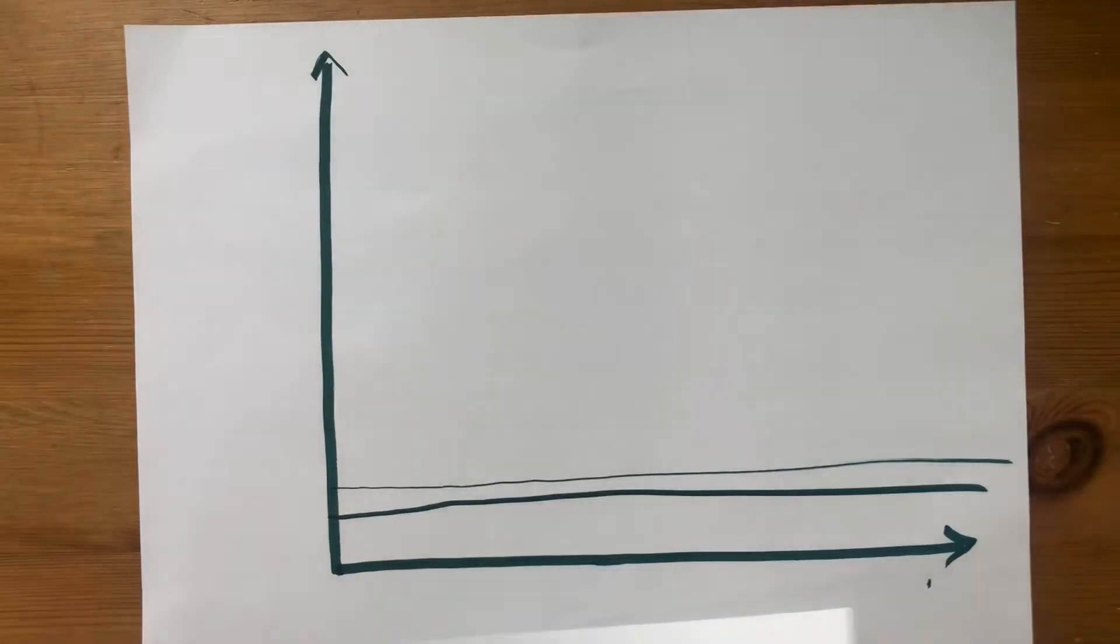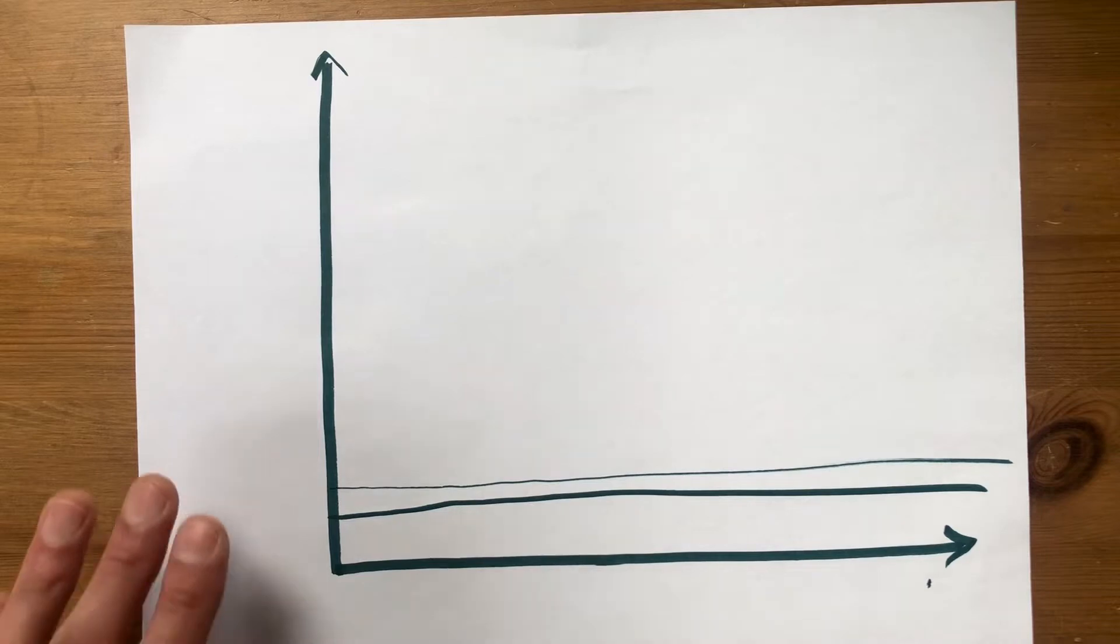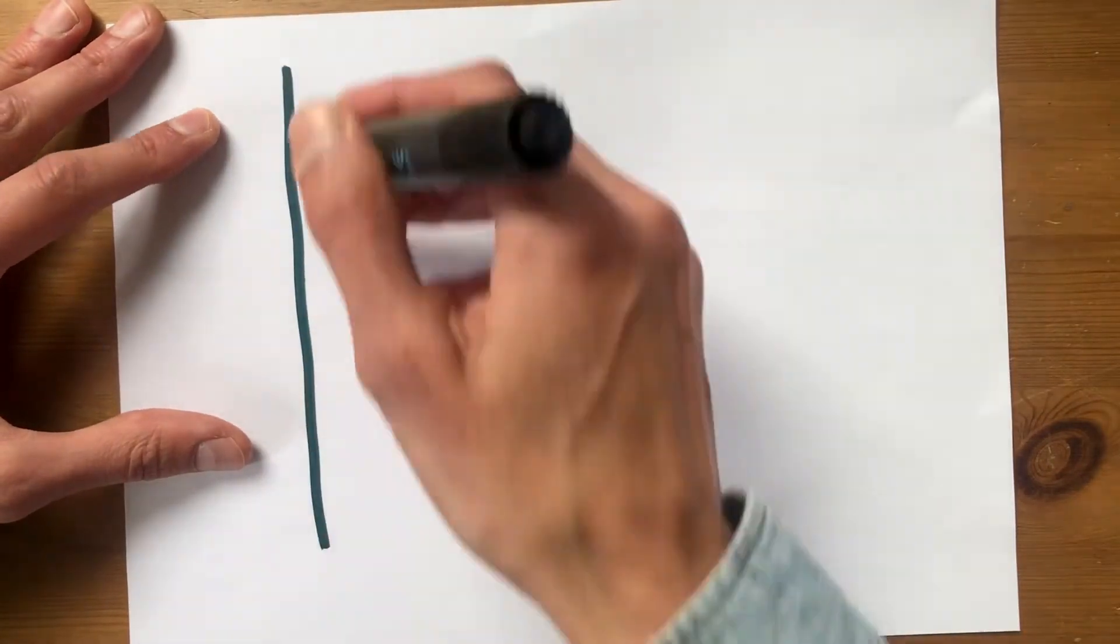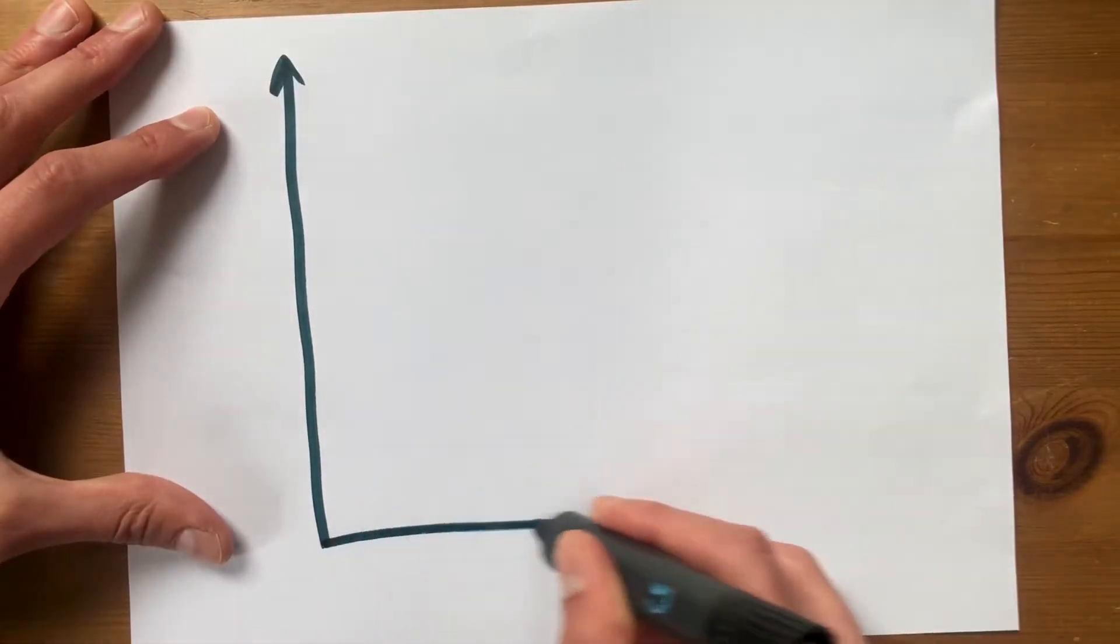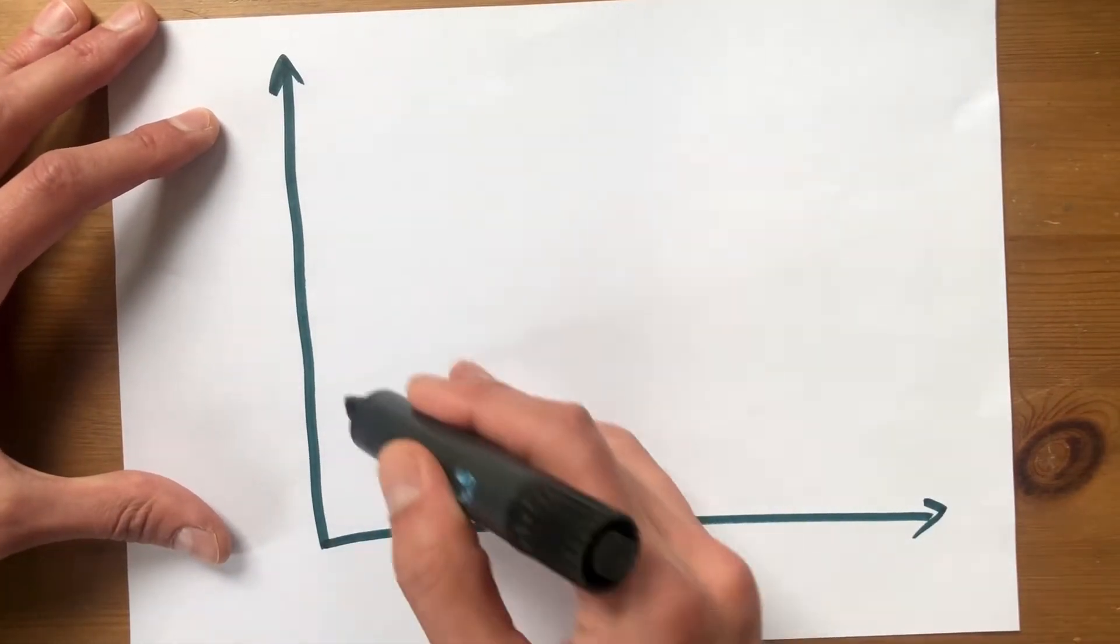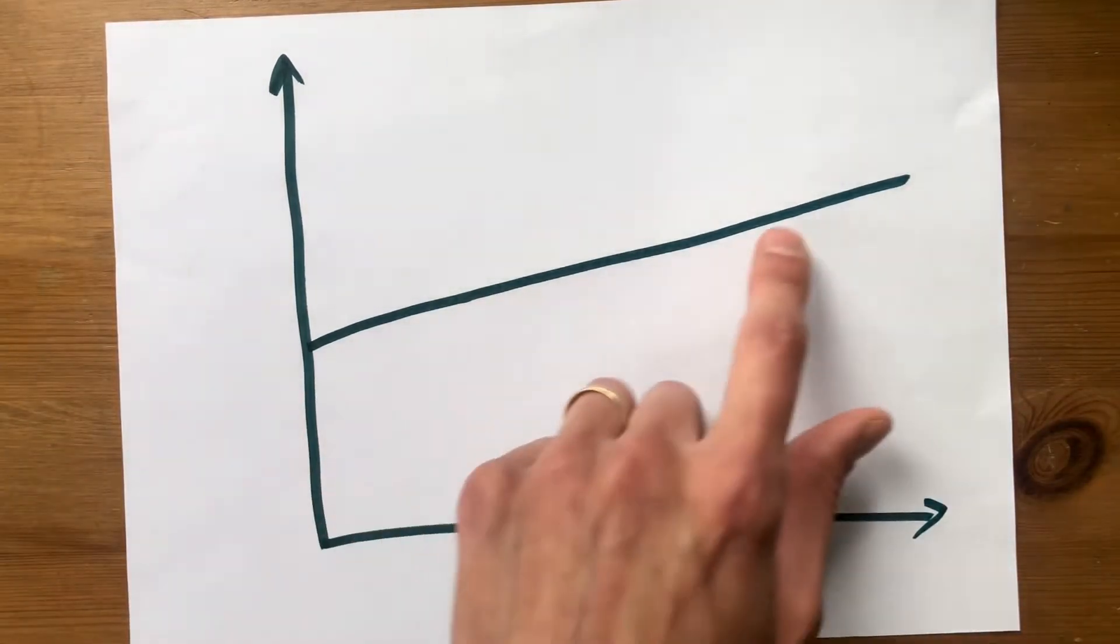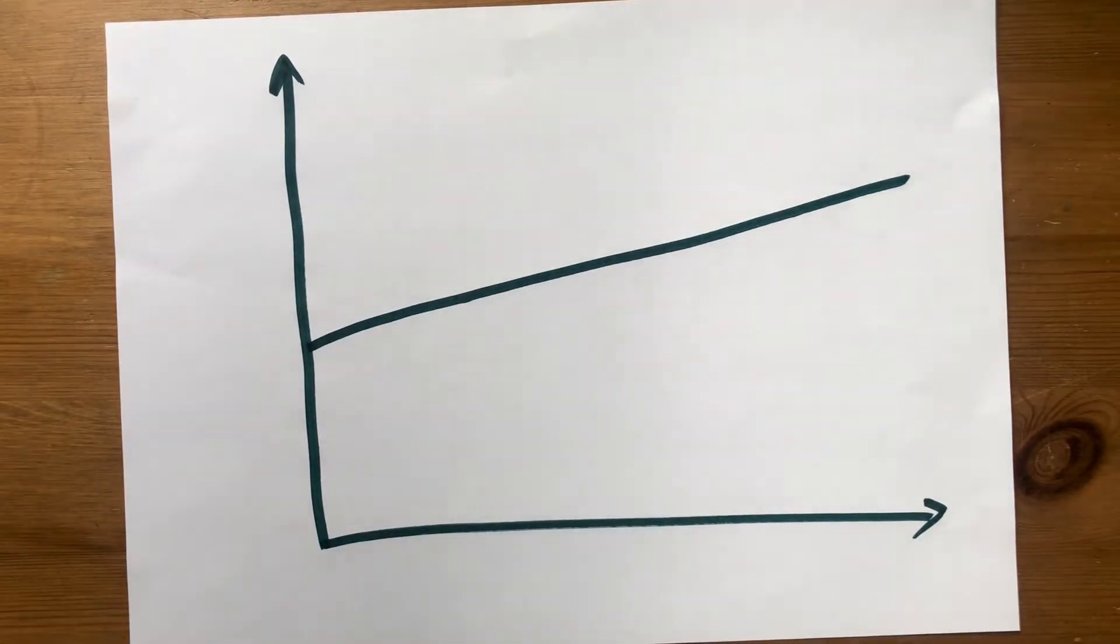So why don't we all use them all the time? Let me redraw our original electric guitar impedance with no buffer. So as you remember, it's a high impedance line and it has a variable impedance.